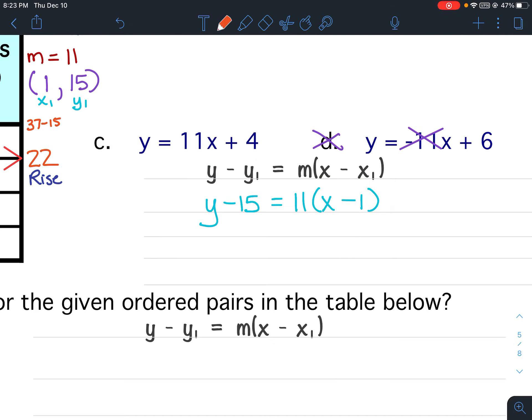All right. We don't have any double negatives. So the first thing we're going to do is the distributive property. So this will stay y minus 15. 11 times x is 11x. 11 times negative 1 is negative 11.